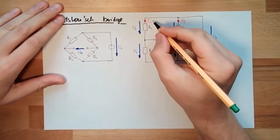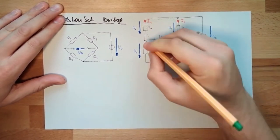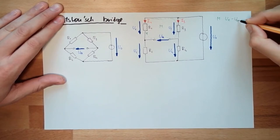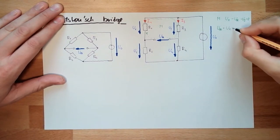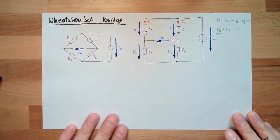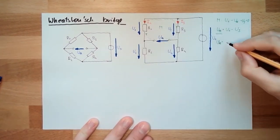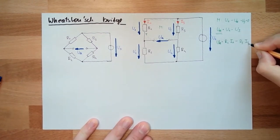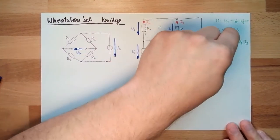If I look at this mesh here and apply Kirchhoff's Law, the mesh means U1 minus UA minus U3 equals zero. This means UA equals U1 minus U3. That's the application voltage. By Ohm's Law, UA equals R1 multiplied by I1 minus R3 multiplied by I3.